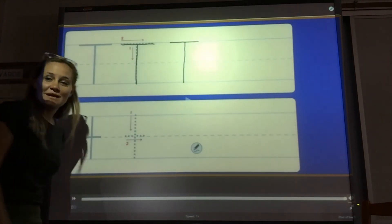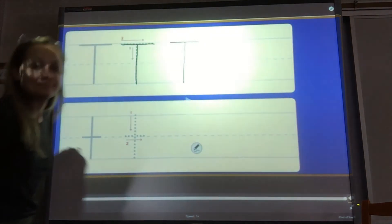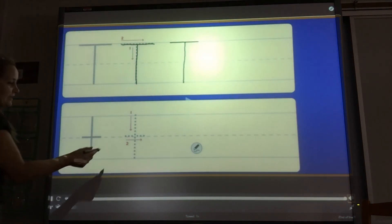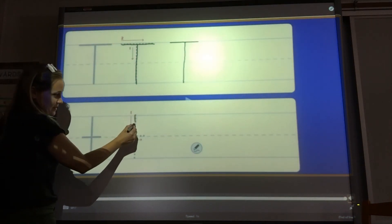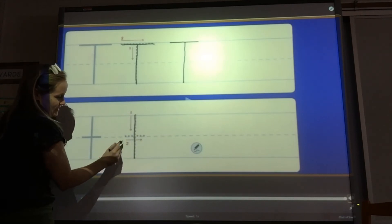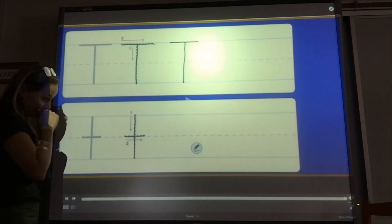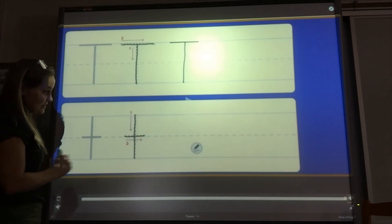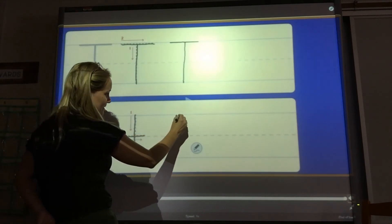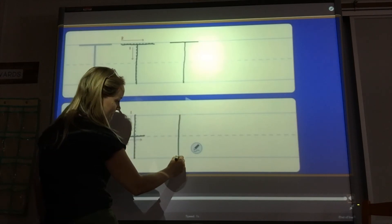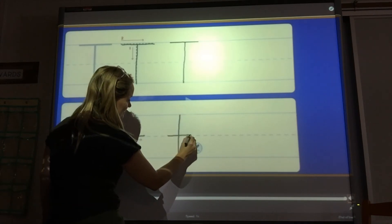Now, let's practice the lowercase T. The lowercase T, we make a straight line down, top to bottom, and then at the dotted line, we go straight across. Then, let's try it again. Straight line down, at the dotted line, across.